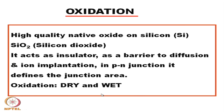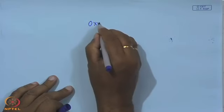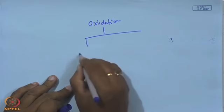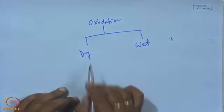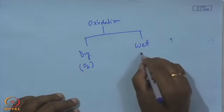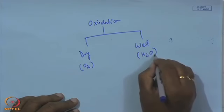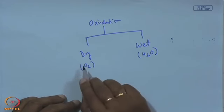High-quality native oxide on silicon is used basically in semiconductor technology. It acts as an insulator, as a barrier to diffusion and ion implantation, and in p-n junctions it defines the junction area. Oxidation can be of two types: dry oxidation, where high-purity oxygen gas is used, and wet oxidation, where high-purity water vapor or steam is used. Depending on the source of oxygen, the process is termed dry or wet oxidation.